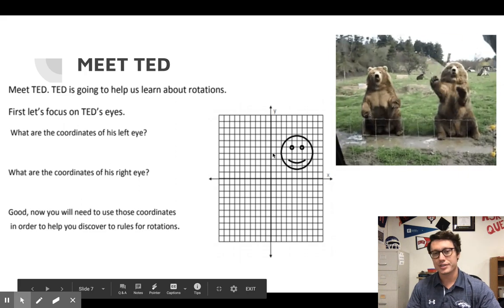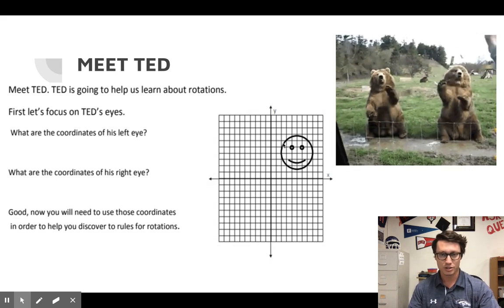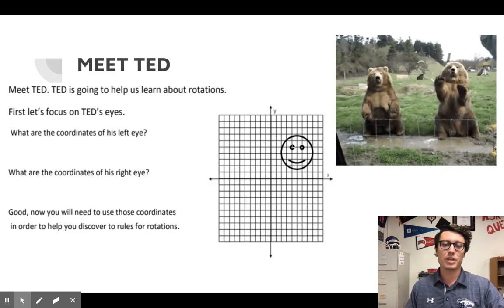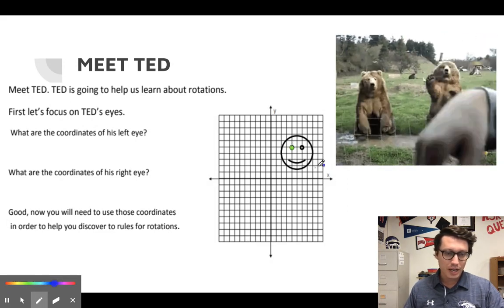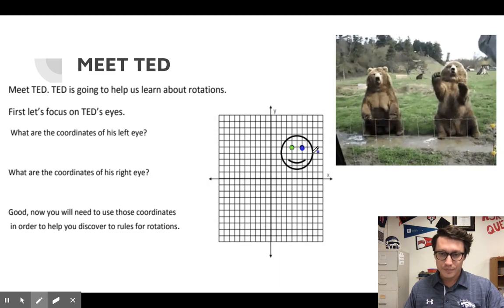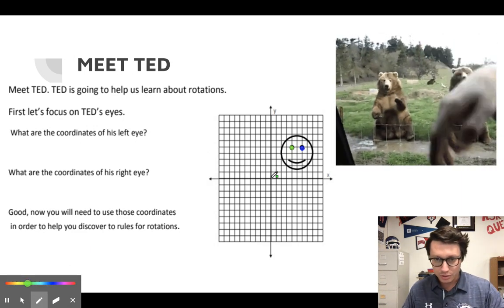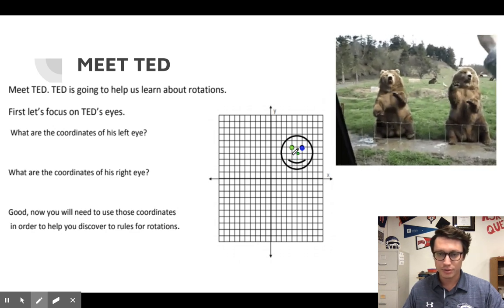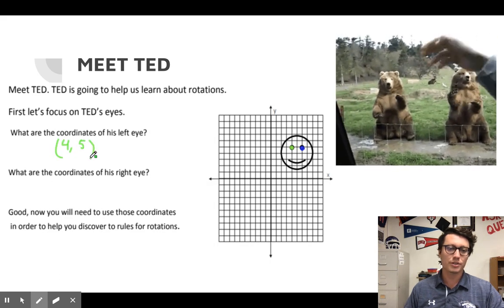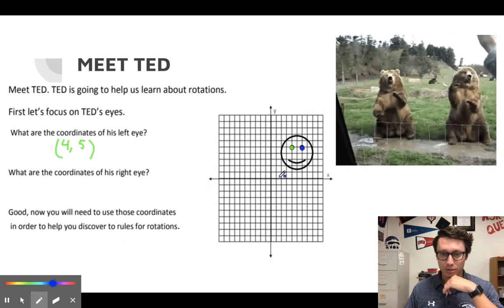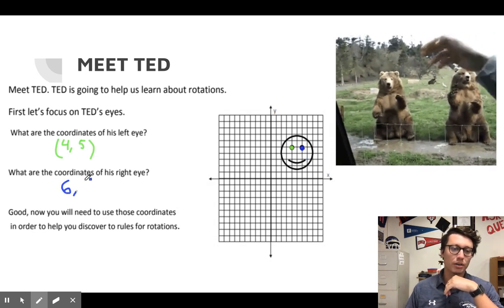I really enjoy this lesson because we get to meet an extremely helpful friend of mine — his name is Ted. Ted is going to help us learn the rotations. We're going to focus on Ted's eyeballs: a green eyeball and a blue eyeball. The coordinates of his left eye — the green one — are over 4, up 5, so (4, 5). The coordinates of his right eye — in blue — are over 6, up 5, so (6, 5).